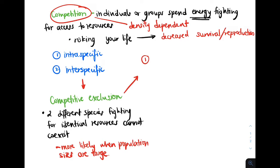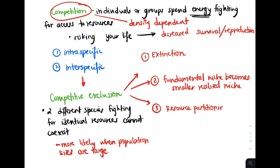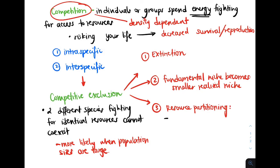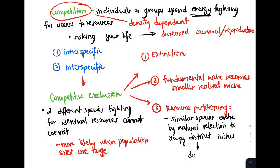Competitive exclusion can result in three phenomena: extinction, a species' fundamental niche becoming a smaller realized niche, or resource partitioning. Resource partitioning is when similar species with identical niches evolve or diverge by natural selection to divide their resources so they can decrease competition. If they occupy distinct niches, then the resources they use do not overlap, so there is less competition.